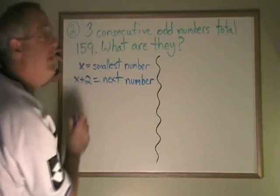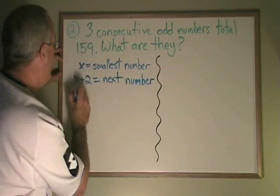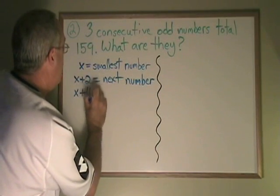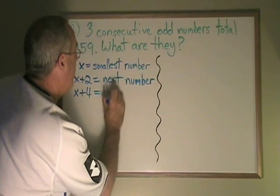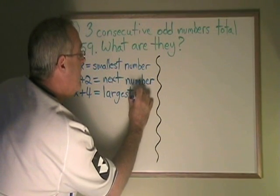And since we're looking for three consecutive odd numbers, I have to define x plus 4 is equal to the last of the three numbers, or the largest of the three numbers.